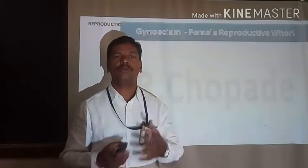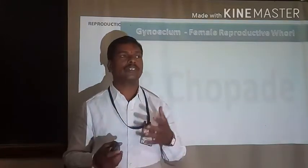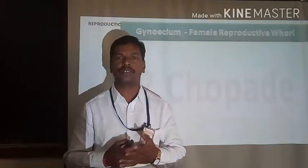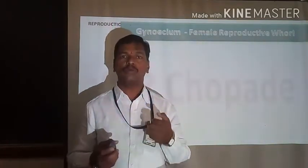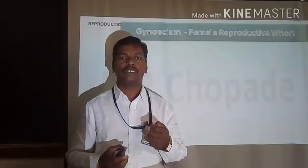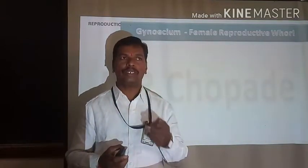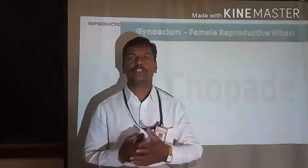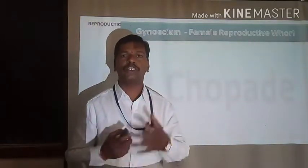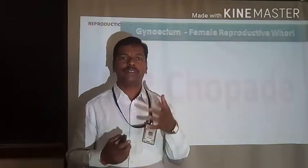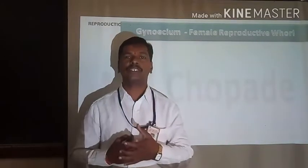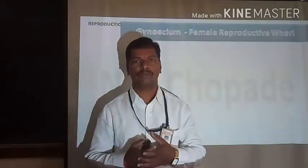First we discussed what is meant by reproduction, then we discussed some salient features concerned with reproduction, then we discussed the modes of reproduction, then the second mode of reproduction, that is sexual reproduction. As concerned with sexual reproduction, the site is the flower, hence we briefly discussed the exact structure of the flower.